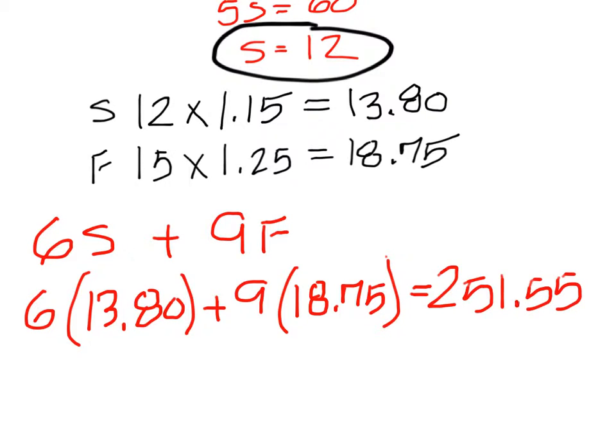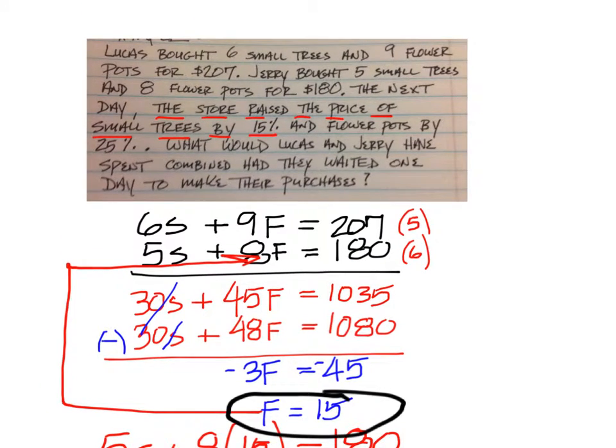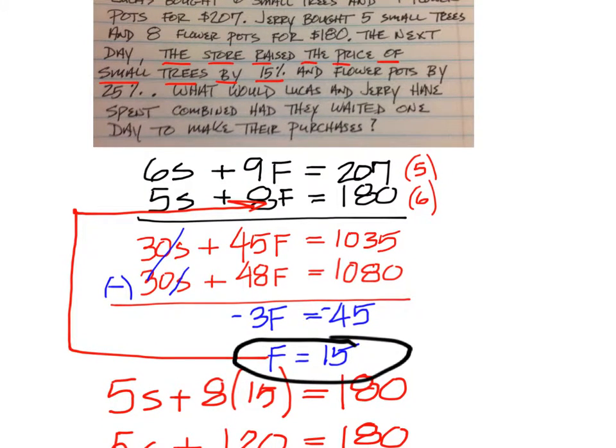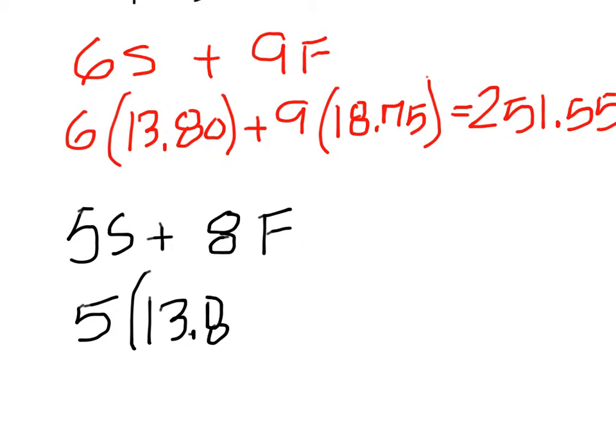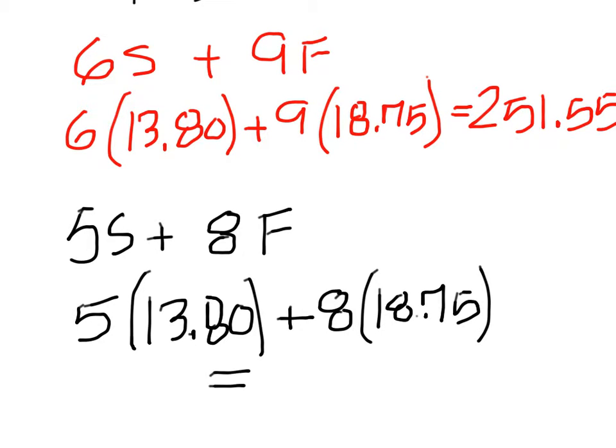For the other one, Jerry was 5S plus 8F. So 5 times the price of a small tree, that would be 13.80, and then plus 8 times the price of a flower pot, 18.75. 5 times 13.80 and then plus 8 times 18.75. That would be 219.